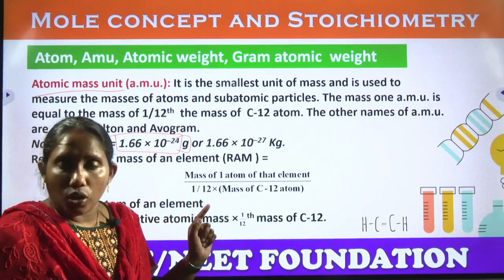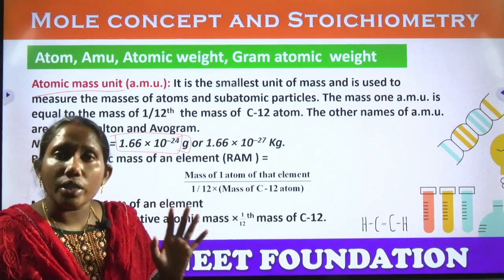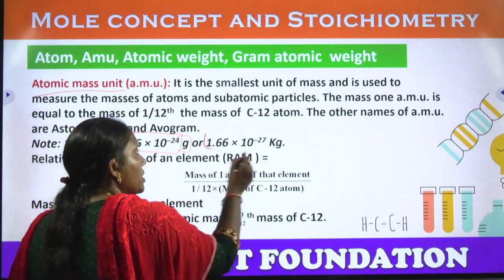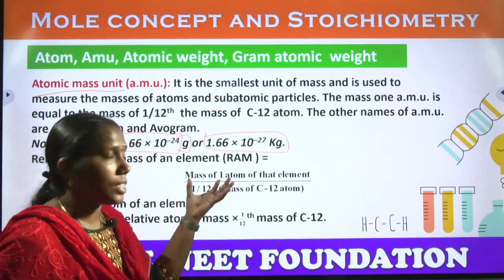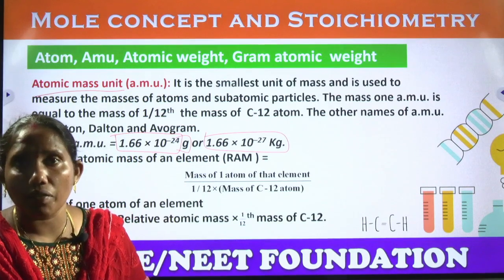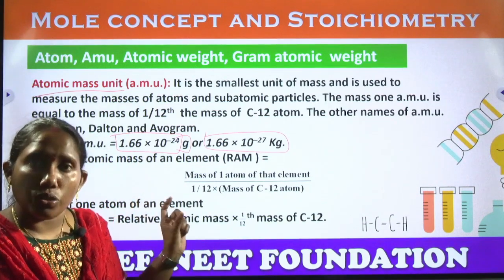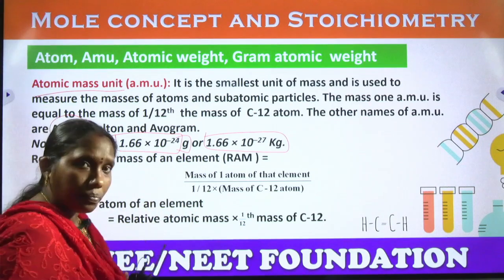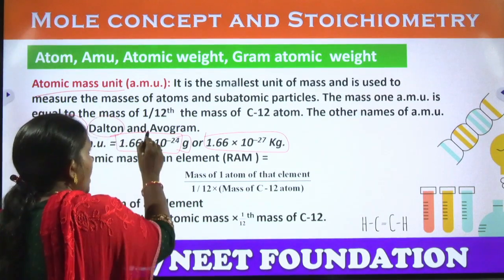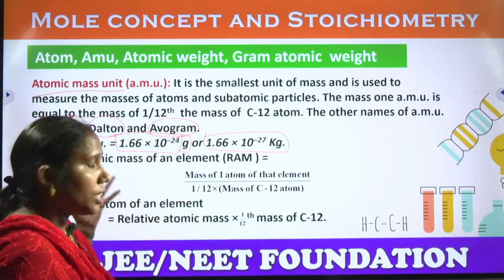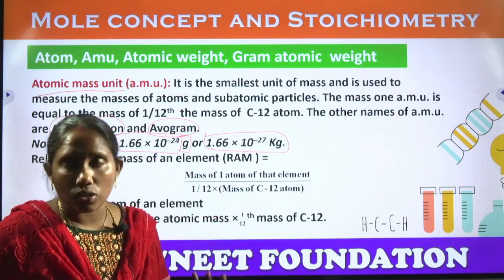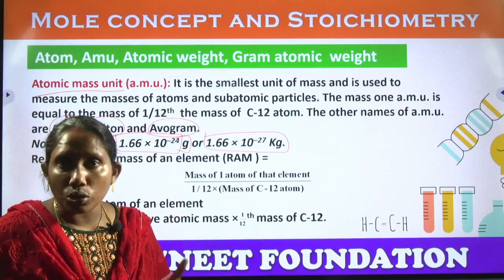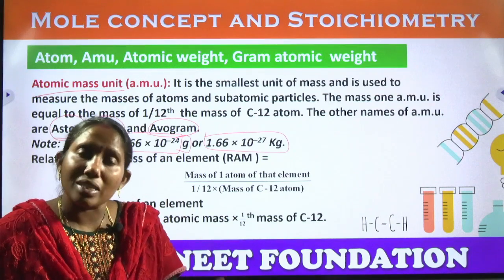One AMU is 1.66 × 10⁻²⁴ grams, and in kilograms that is 1.66 × 10⁻²⁷ kg. This atomic mass unit is also known as Ashton, Dalton, and Avogram — these names also represent the atomic mass unit. Nowadays instead of writing AMU, we also use the small letter 'u' to represent atomic mass units.